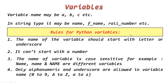The rules for Python variables: the name of the variable should start with a letter or underscore — it cannot start with a number. The variable name is case-sensitive; for example, 'name', 'Name', and 'NAME' are three different variables. Only alphanumeric characters and underscores are allowed — 0 to 9, A to Z, a to z. So 'a1' is valid, but '1a' is not — you cannot start a variable name with a digit.